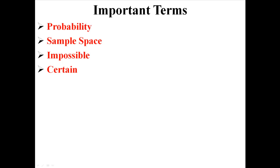And that's the basics of probability. Understand what a sample space is, that it's just a list of all possible outcomes. And know what it means for something to be impossible, and for something to be certain.